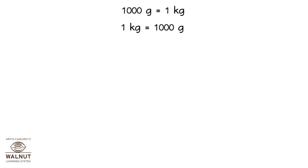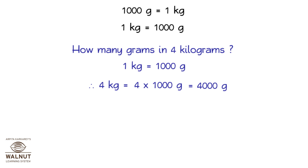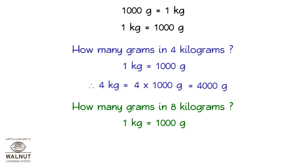How many grams are there in four kilograms? One kilogram is equal to one thousand grams, therefore four kilograms is equal to four into one thousand grams, which equals four thousand grams. How many grams in eight kilograms? One kilogram is equal to one thousand grams, therefore eight kilograms is equal to eight into one thousand grams, which equals eight thousand grams.